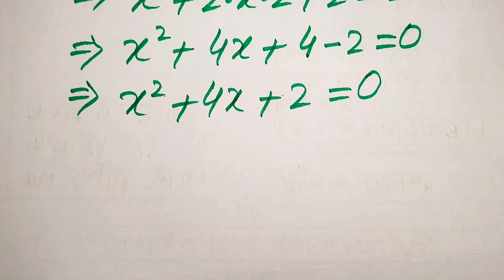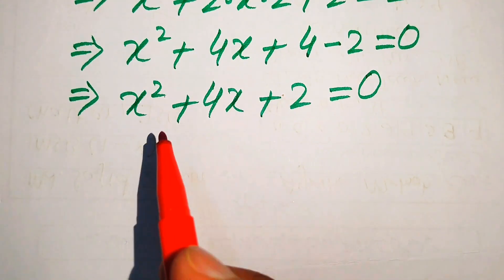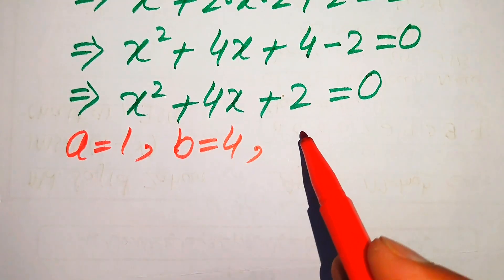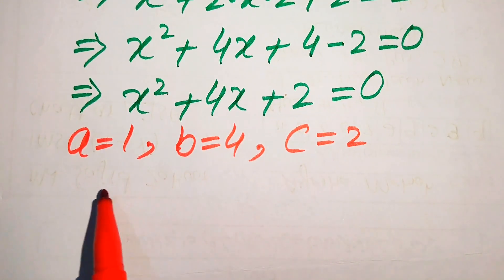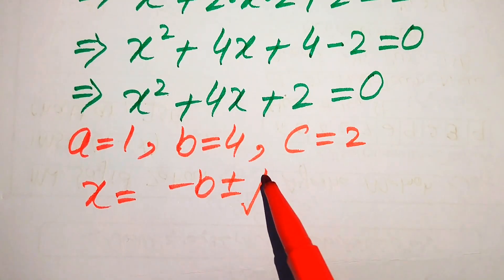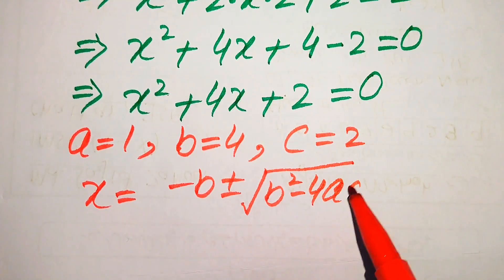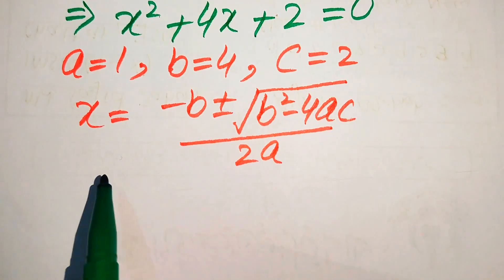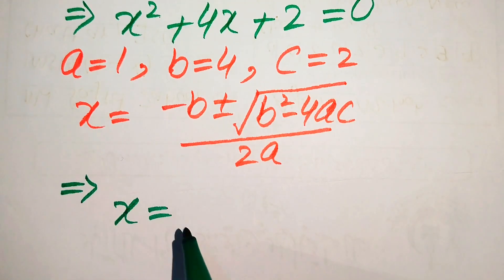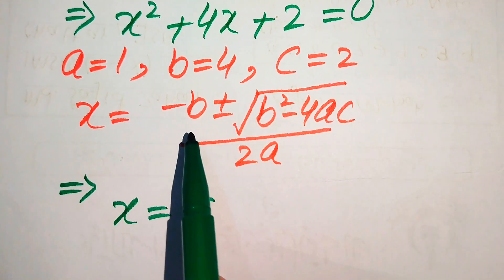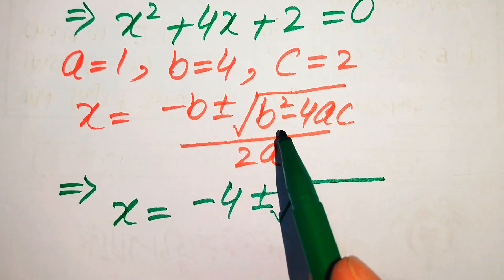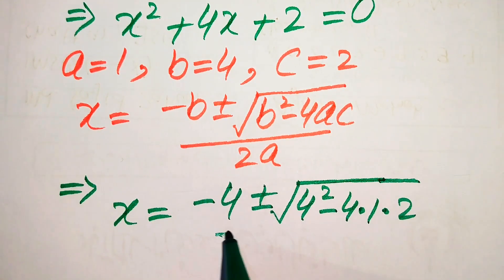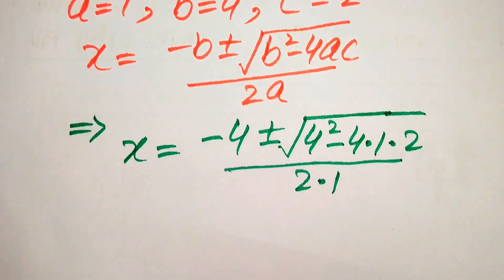Now we use the quadratic formula to solve this quadratic equation. First we identify the coefficients: a = 1, b = 4, and c = 2. The quadratic formula is x = (−b ± √(b²−4ac)) / (2a). We substitute the values of a, b, and c: x = (−4 ± √(4² − 4·1·2)) / (2·1).